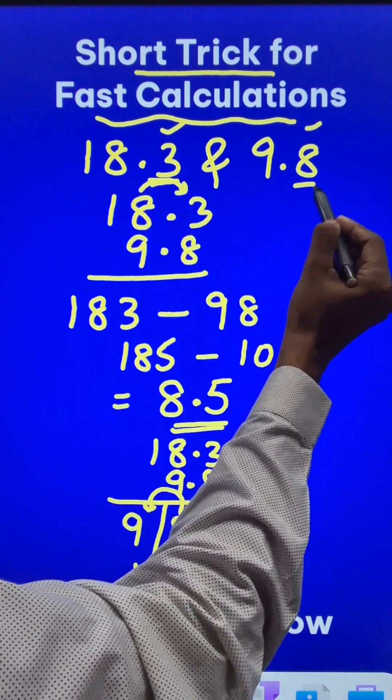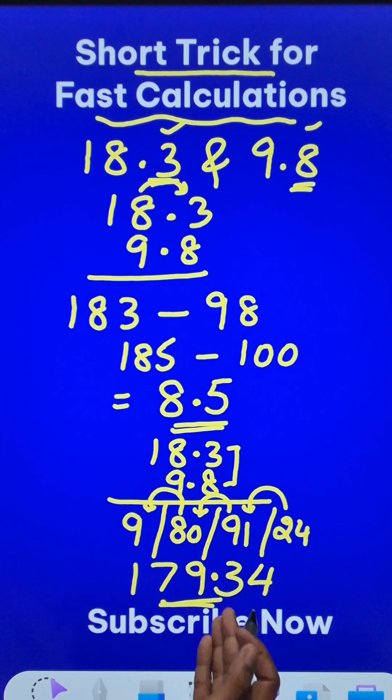Now where do you put the decimal? We have two decimal places in all. So from the right hand side, put a decimal and here is your answer for the product.